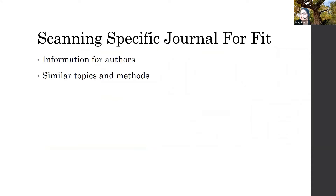Once you've done your scoping, I generally recommend picking three different journals you're going to target. That's pretty realistic unless you just want to go for a simpler journal that publishes a lot. When figuring out the fit, look at the 'Information for Authors' section and then the journal itself — the most recent couple of issues — to see if they're publishing similar topics and methods.